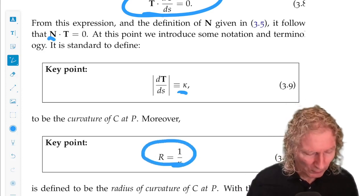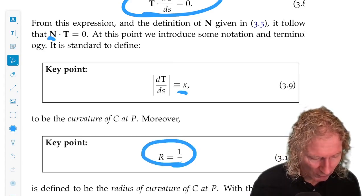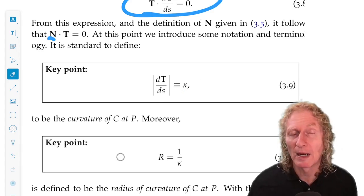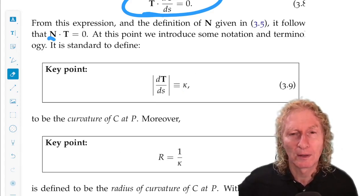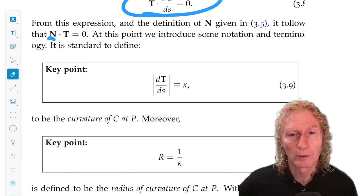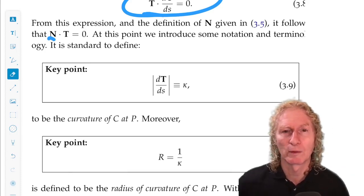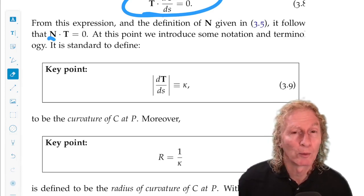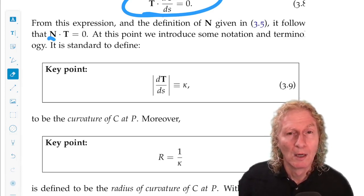Now, when I first learned this, I didn't have any intuition for this. Why do you call this curvature? Well, develop some intuition by looking at concrete examples. So a straight line has no curvature, you would guess, and a circle, uniform circle, has curvature that you can compute. And you know what the radius of curvature would be.